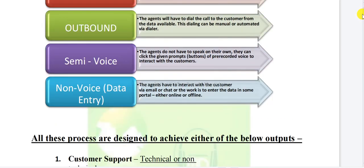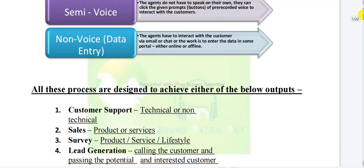The next type is data entry process — we are just going to type something, or copy and paste. Other than voice and semi-voice, whatever we do on keying or typing, including copying and pasting, is all data entry work, otherwise called non-voice. So these are the basics: inbound, outbound, semi-voice, and non-voice. Now we move on to the next level.